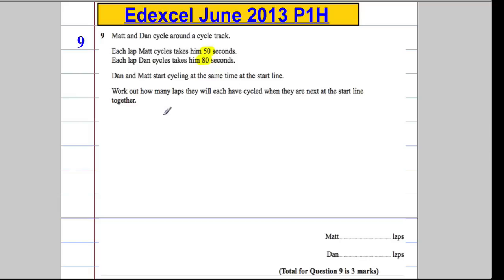So at what point are they at the starting line at the same time? Well, that's going to happen when these two times overlap. It's essentially a lowest common multiple question. There are many different ways to do it — I could work out the lowest common multiple of 50 and 80.